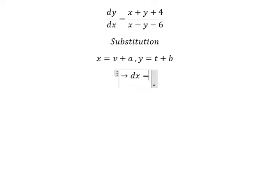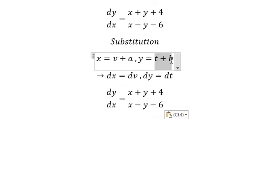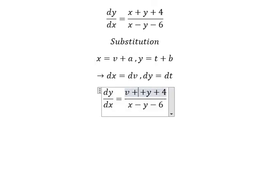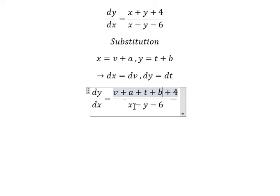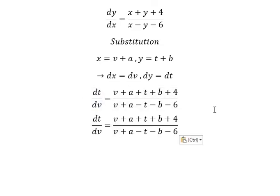If we do the first derivative for both sides, dx equals dv and dy equals dt. Now I'll substitute x and y using these expressions. Because we have the negative side, that gives us negative t and negative b. We change dy to dt and dx to dv, then put a plus b plus 4 in here.